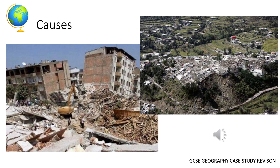Earthquakes occur as a result of two plates trying to pass one another. In this case it was at a collision plate boundary involving the Eurasian plate and the Indian plate. Friction between the two plates caused pressure to build up. Eventually the two plates jumped past one another, causing the release of pressure as seismic waves.